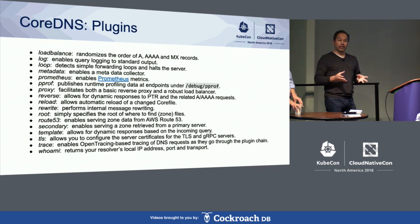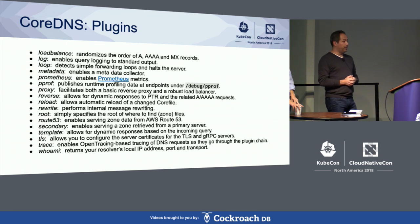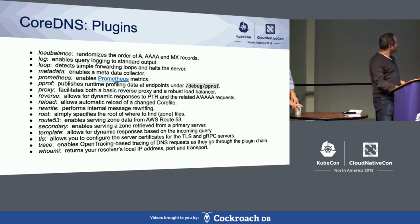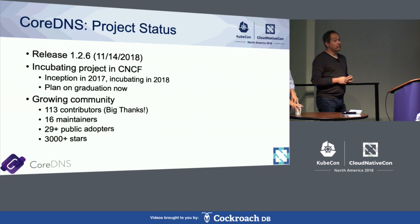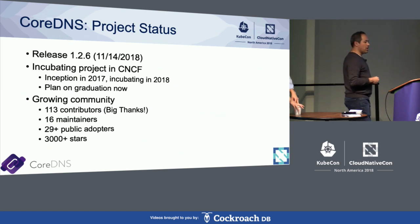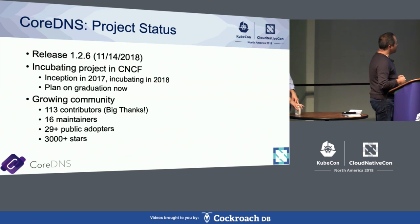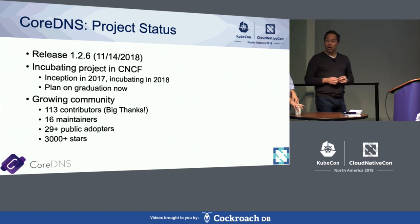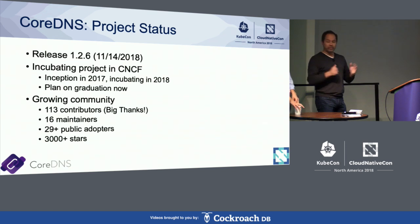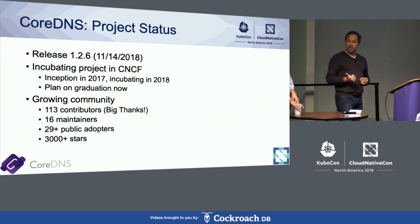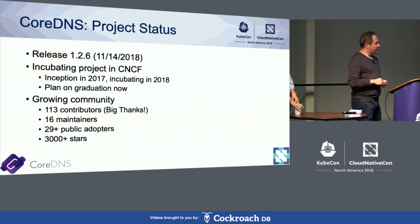If you wanted a full recursive DNS server today, you could use the Unbound plugin, compile that in, and go. CoreDNS is at release 1.2.6, which came out about a month ago. Its status within the CNCF is incubating — we're told it's going to go for its graduation vote very soon. It's a growing community with about 113 different contributors, 16 maintainers, many of whom are in the room today, 29-plus public adopters, and now over 3,000 stars on GitHub.